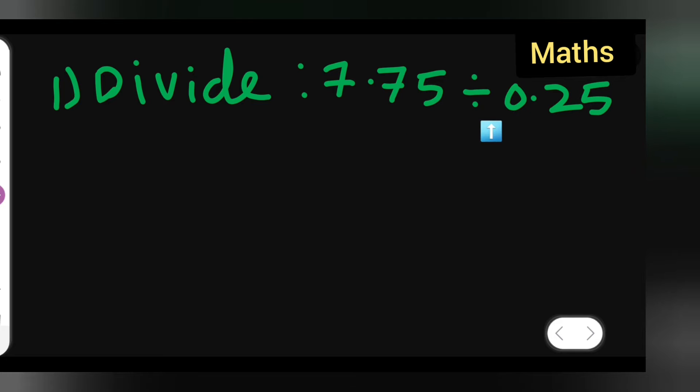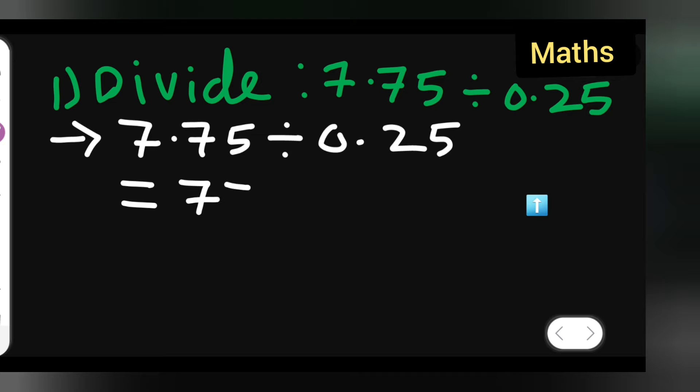So first, check down the question: divide 7.75 divided by 0.25. Now how are we going to do this? First, write down the step: 7.75 divided by 0.25. After that, write down equals to, now remove the decimal point, so write down 775.